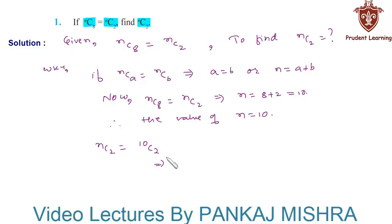Now, we know that 10c2 can be written as 10 factorial over 10 minus 2 factorial into 2 factorial. This is by the formula Ncr is equal to N factorial over N minus R factorial into R factorial.